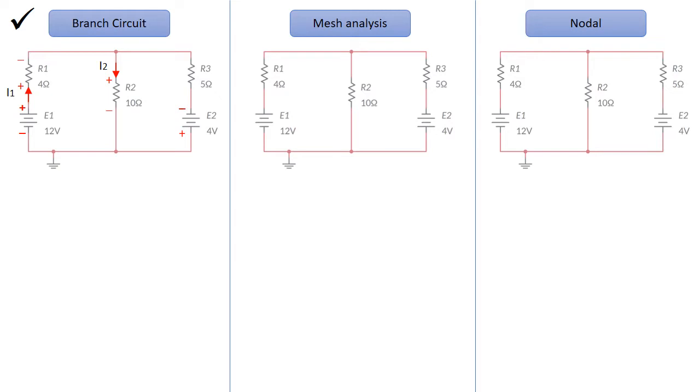And the second current, which is I2, as you can see, it will enter R2 resistor. It will cause positive and negative signs, as can be seen here.